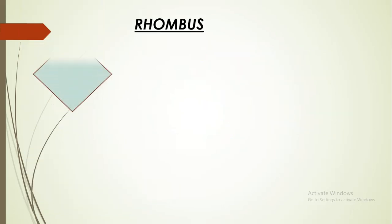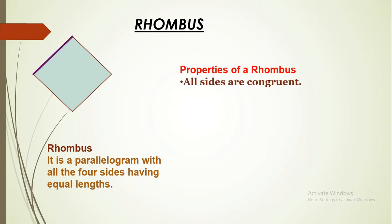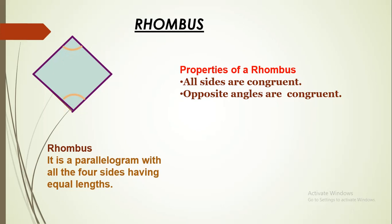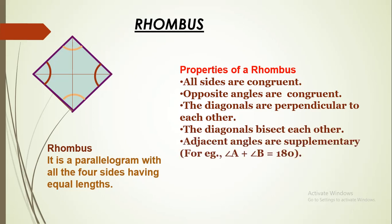Next, Rhombus. It is a parallelogram with all four sides having equal lengths. Properties: all sides are congruent. Opposite angles are congruent — opposite angles are equal. Diagonals are perpendicular to each other — the angle between the diagonals is 90 degrees. Diagonals bisect each other, and adjacent angles are supplementary.